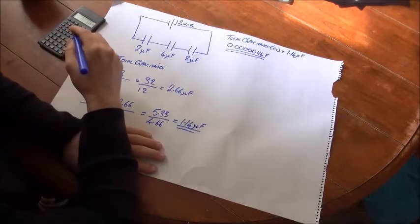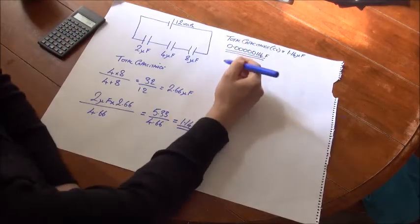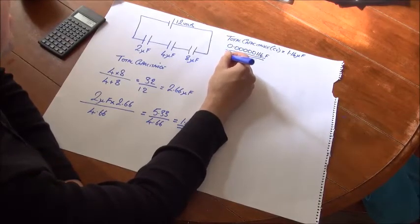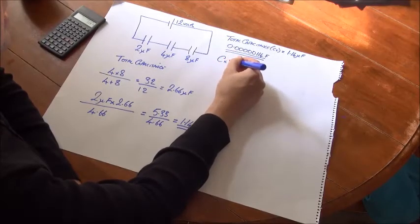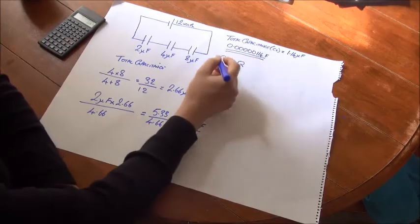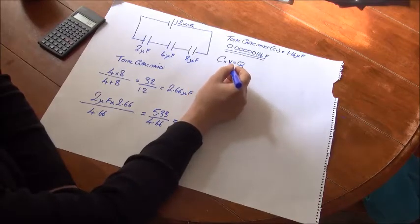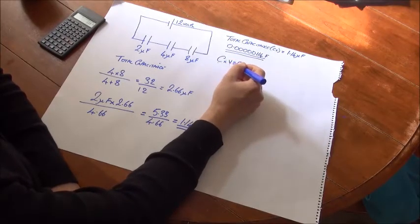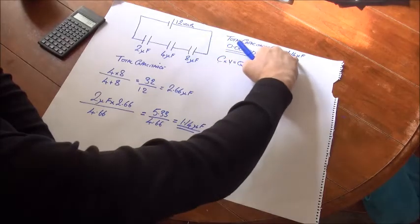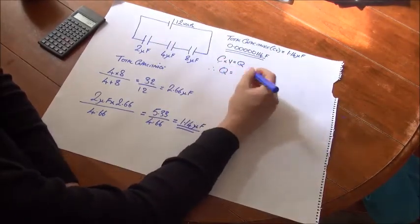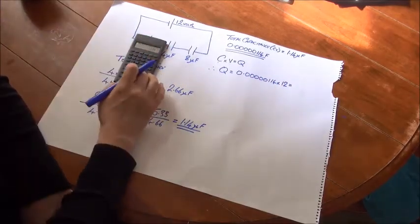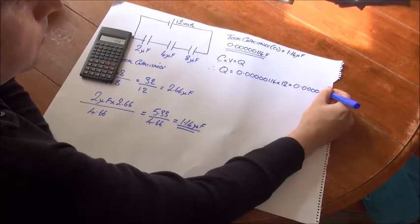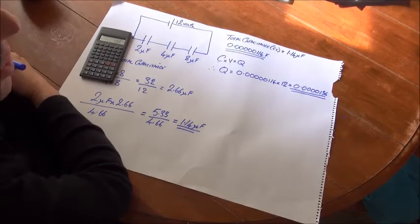Next, we can find the total charge. Now, there's one equation that we deal with capacitors with all the time in terms of charge, voltage and capacitance, and that is C times V is equal to Q. So we can find the charge in this circuit by multiplying our total capacitance by the applied voltage, and we find Q is equal to 13.6 microcoulombs.